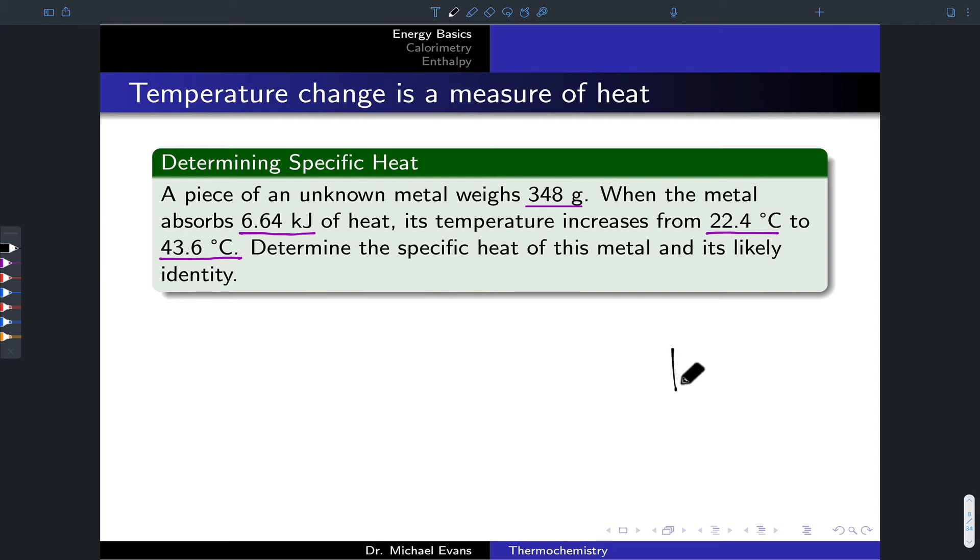Let's draw a picture of the situation. We've got a block of metal that's probably sitting on a hot plate or something like that. The metal has a mass, 348 grams. We know that, and we know the temperature increase, 22.4 to 43.6 degrees C. We also know the amount of heat delivered, 6.64 kilojoules. I'm looking for a specific heat. I have the mass, the heat, and a temperature change. Q, M, C, and delta T are the key components of this problem.